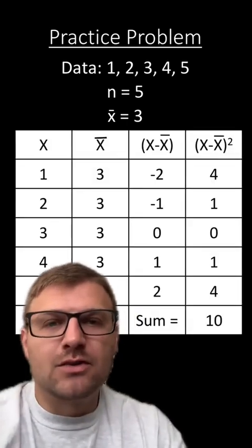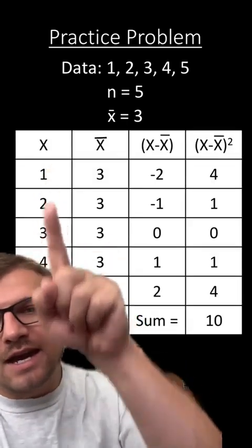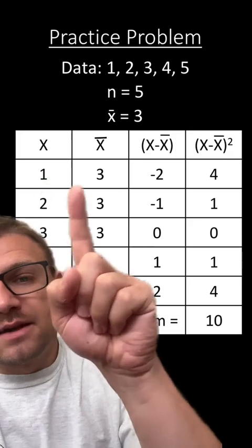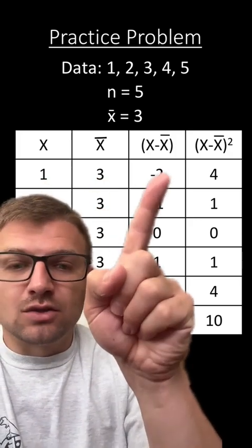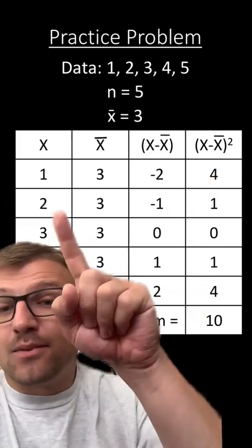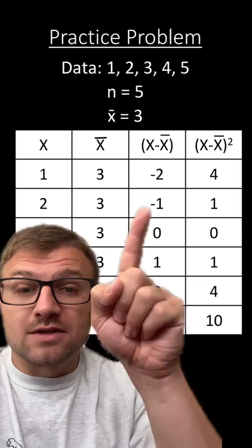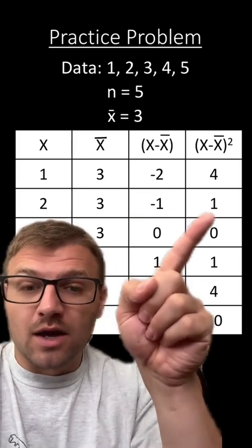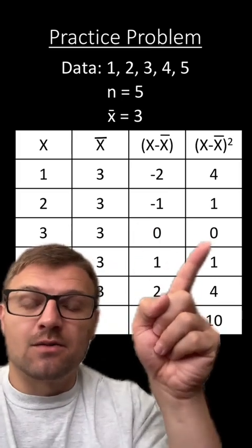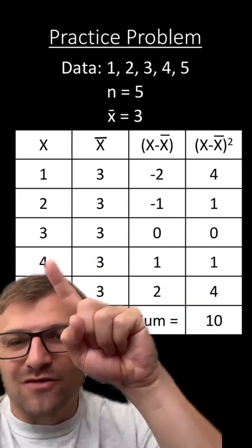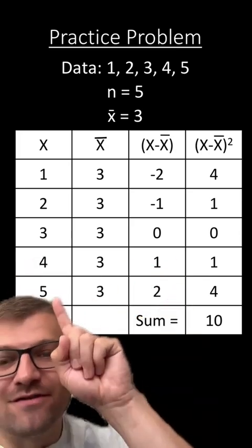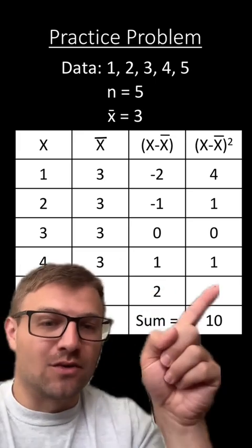Now we have to take each data point x and subtract the mean from it. For the first data point, it's one minus three, which is negative two — negative two squared is four. For the second data point, it's two minus three, which is negative one — negative one squared is one. Our third data point is three: three minus three is zero, zero squared is zero. Our fourth data point is four: four minus three is one, one squared is one. And our fifth data point is five: five minus three is two, two squared is four.